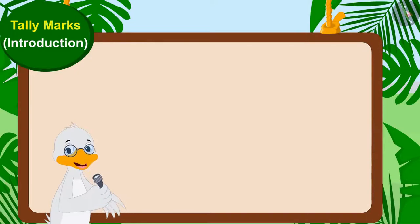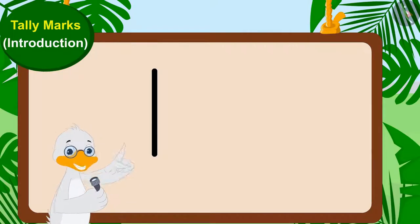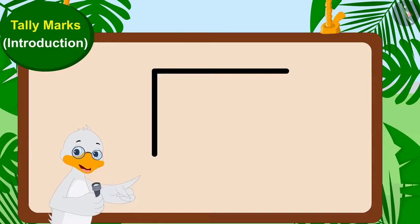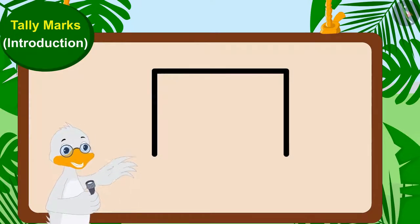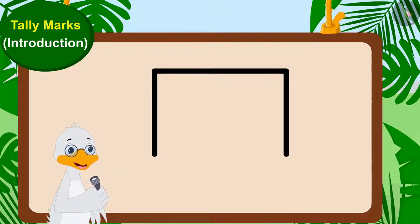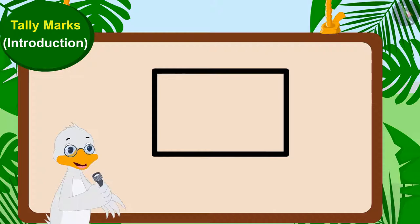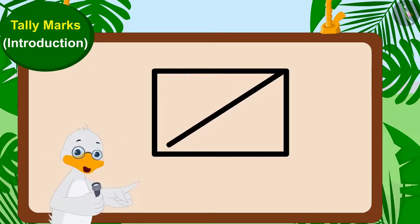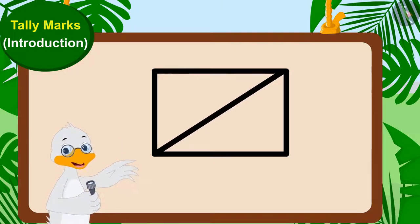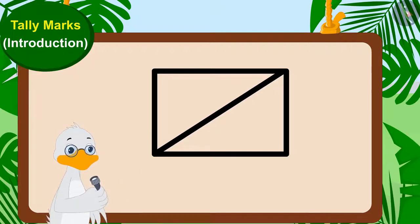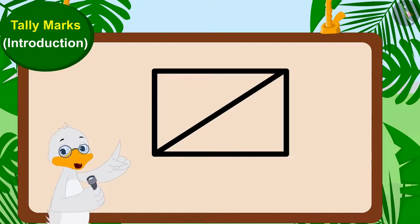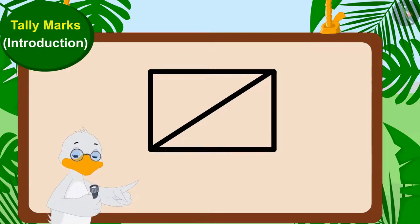Draw a vertical line like this for the first vote. For the second vote, create a horizontal line in this way. For the third vote, a vertical line like this. And for the fourth vote, once again a horizontal line. And for the fifth vote, we will make a diagonal line like this to form a group of tally marks. And then, for further votes, we will repeat this process and make groups of tally marks.